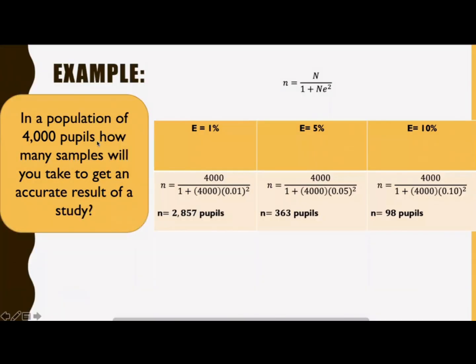Based on the result, the smaller the margin of error, the greater the sample. If the margin of error is 1%, there is a sample of 2,857. While the margin of error of 10% gives a smaller number of respondents of 98 pupils.